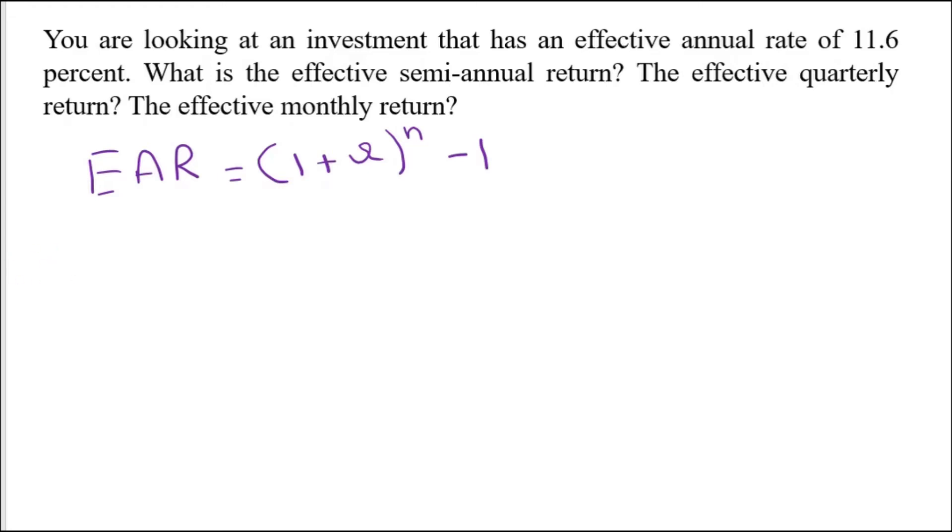So effective interest rate semi-annually: (1 + r)^(n/2) - 1 = (1.116)^(1/2) - 1 = 0.0641, which means 5.641 percent. For quarterly: